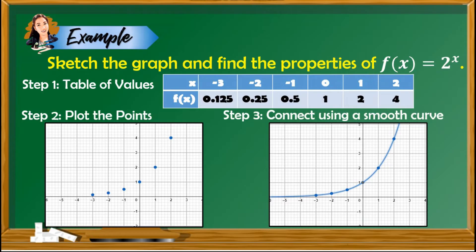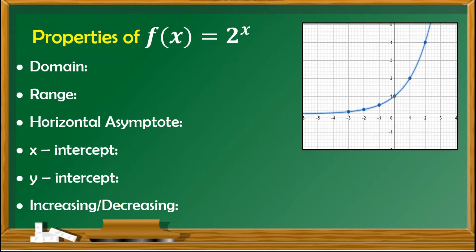Next is to find the properties. To find the properties of exponential functions, if there is a graph we can base it on the graph, or if there is none, we base it on the general properties. As for the domain, since we can use any real number for x, the domain is the set of real numbers. For the range, we don't have a value of h being added or subtracted, therefore the value of h is 0.